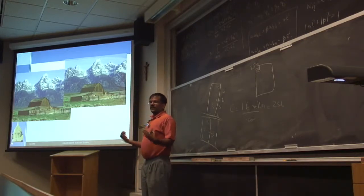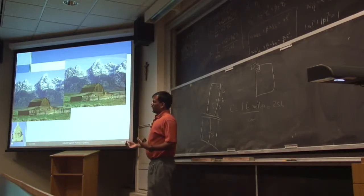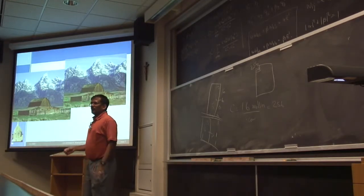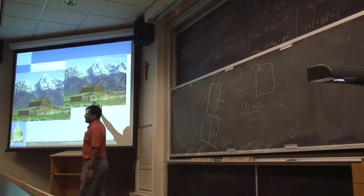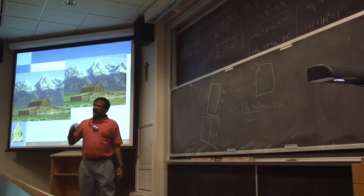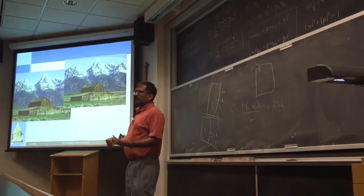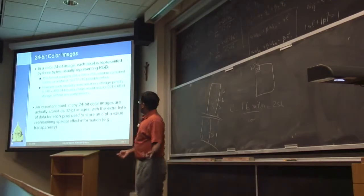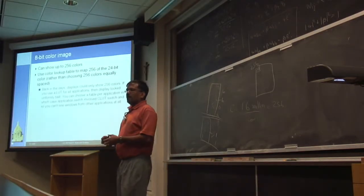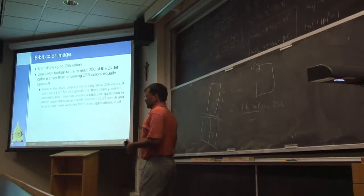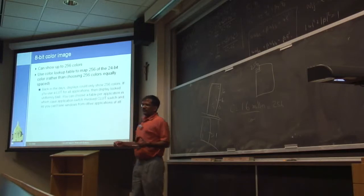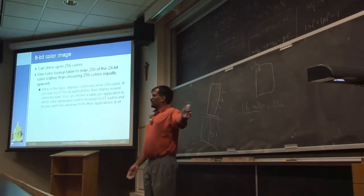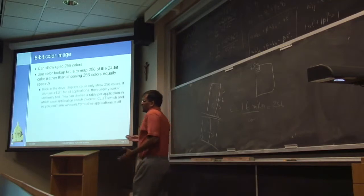Depending on how good the algorithm is, the result may or may not be annoying. If you're interested in looking at this building, it looks fairly good — even though one has 16 million colors and the other only has 256 colors, it still looks okay. That's one of the reasons why depending on the algorithm and software, the transformation can make the image look awful or look good. This technique also had implications for displays. If you have an 8-bit screen, you notice the artifacts. The projector only supports 3-bit color, so I can't really show this on the screen.